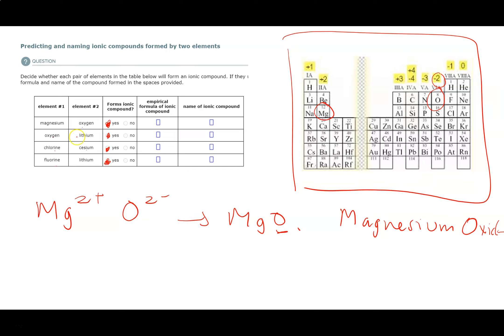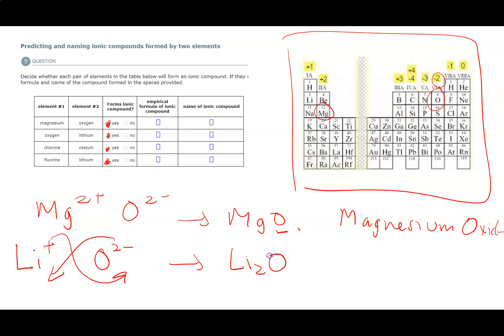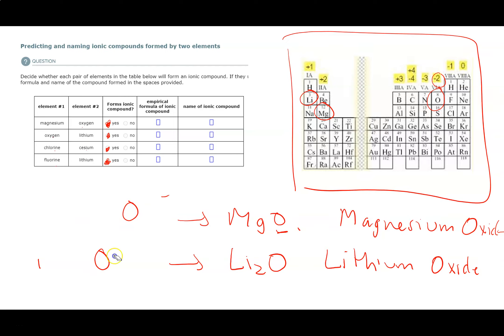For the second compound, lithium is in Group 1A so it's +1; oxygen is still 2−. They don't have equal and opposite charges, so we do a crossover: we need two lithiums and one oxygen, giving Li₂O. Because lithium is in Group 1A it doesn't need Roman numerals in its name, so this is simply lithium oxide.